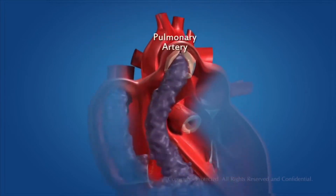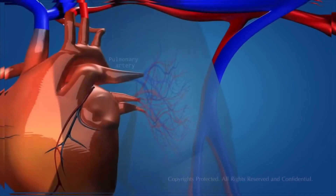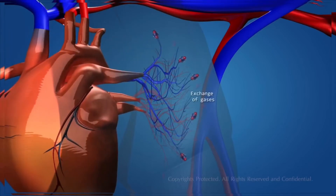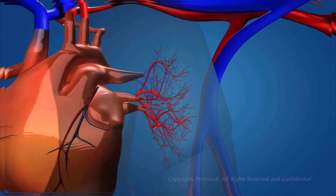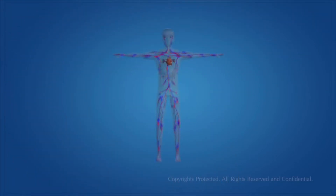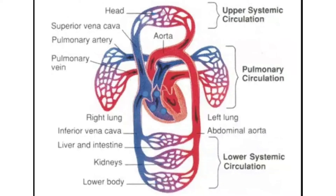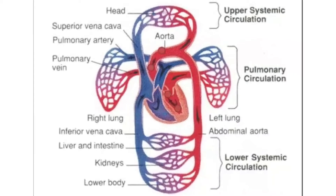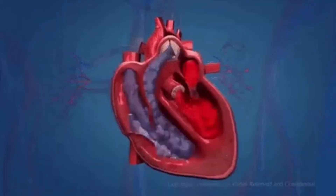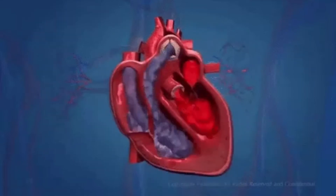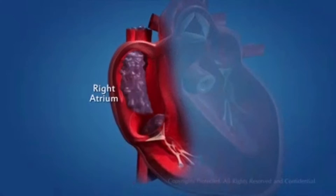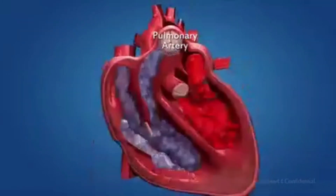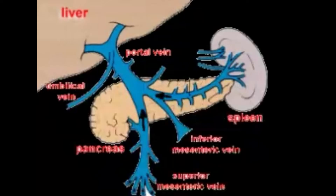It also takes away carbon dioxide and other harmful substances from the tissues for elimination from the body. Pulmonary circulation is a smaller circuit carrying blood to the lungs and back to the heart, while systemic circulation is a larger circuit supplying blood to various parts of the body and back to the heart. Pulmonary circulation carries deoxygenated blood to the lungs for oxygenation, while systemic circulation supplies oxygenated blood to all parts of the body. Blood pumped by the right ventricle and received by the left atrium is through pulmonary circulation, while blood pumped by the left ventricle and received by the right atrium is through systemic circulation.